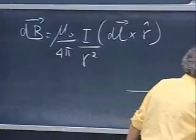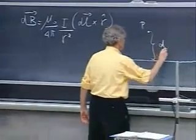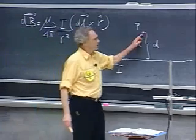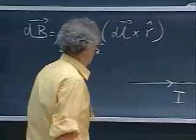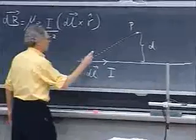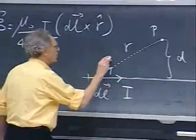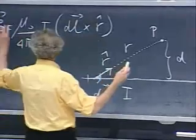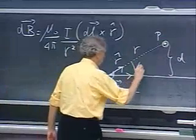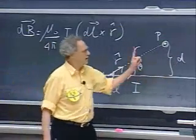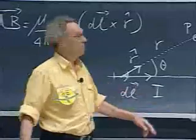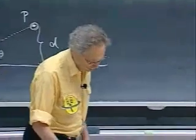A classic problem you have probably done: we have a point P at a distance D from a wire, and the current through the wire is I. If you want to know the magnetic field at P, you can use Biot-Savart — it will be a stupid thing to do, but you can do it. You take a small element dL of the wire. This distance is R, this is the unit vector R-hat, the sine of theta is D divided by R, and then you integrate over the whole wire from theta zero to pi.